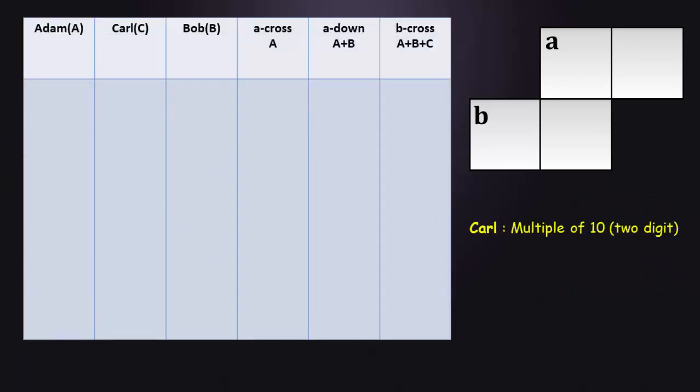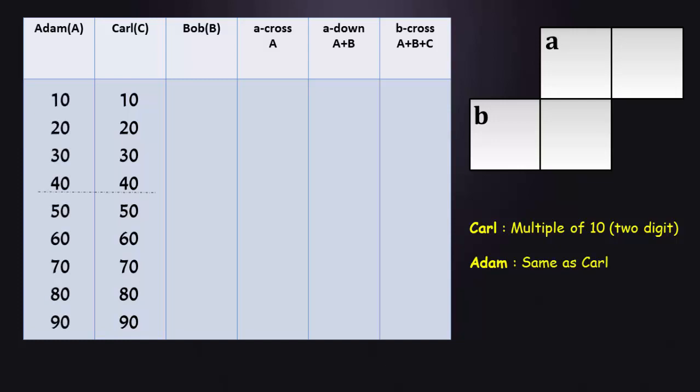Karl's age is a multiple of 10, and Adam is same age as Karl. So Adam's age is also a multiple of 10. Their age cannot be greater than 40 years each, because if they both are 50 years or above, then their addition would become a three digit number, and B cross requires only two digits.